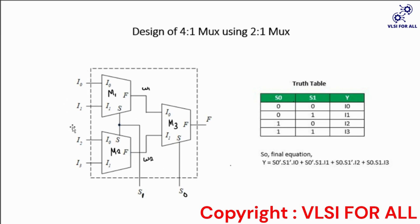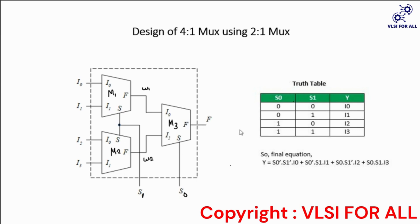The three 2x1 multiplexers are connected so that they operate exactly as a 4x1 multiplexer. The first two inputs i0 and i1 are given as inputs to m1, and the next two inputs i2 and i3 are given as inputs to m2. The outputs of m1 and m2 are given as inputs to m3. Selection line s1 is given to m1 and m2, and s0 is given to m3. The output of m3 is the total output of the 4x1 multiplexer.